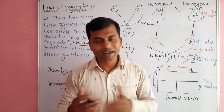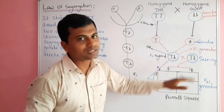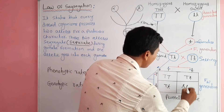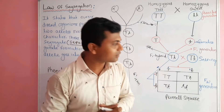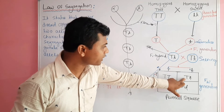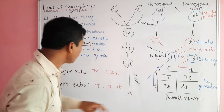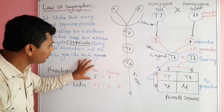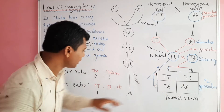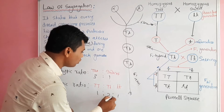Mendel allowed selfing of F1 hybrids. On selfing, the F1 hybrid forms two types of gametes: capital T and small t. These gametes of F1 hybrids combine randomly to produce plants of the F2 generation. Out of four plants of the F2 generation, the first plant is homozygous, the second plant is heterozygous, the third is heterozygous, and the fourth is homozygous. Out of the four plants, three plants are tall and one plant is dwarf. The genotype ratio is 1 capital T capital T : 2 capital T small t : 1 small t small t, giving a genotype ratio of 1:2:1.